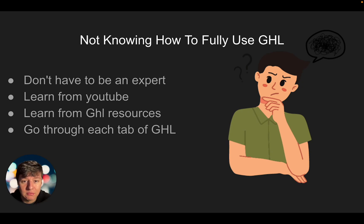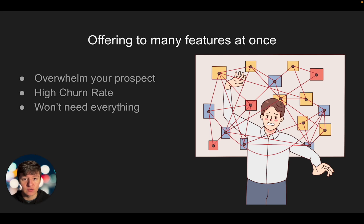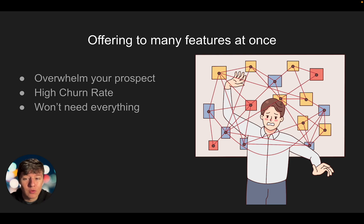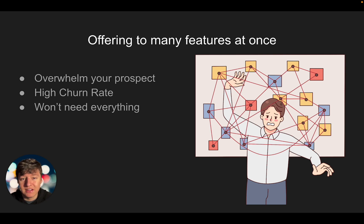The next big mistake I made — and I see a lot of beginners make — is offering too many features all at once. My first demo calls had a huge presentation covering every single feature of Go High Level. Some people did sign up, but a lot were absolutely overwhelmed and confused. Remember how overwhelmed you felt when you first started? That's exactly how your client will feel. And even if you sign a couple clients this way, you'll have a high churn rate — they won't stick around.